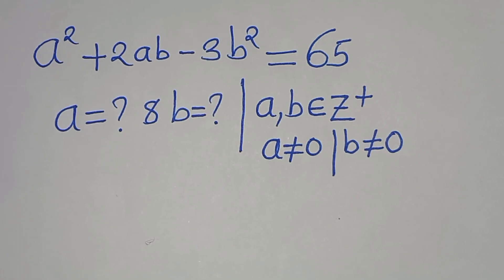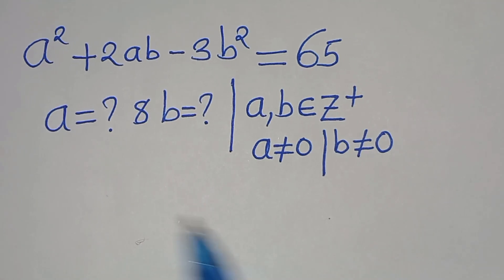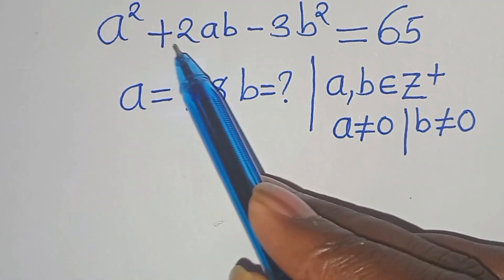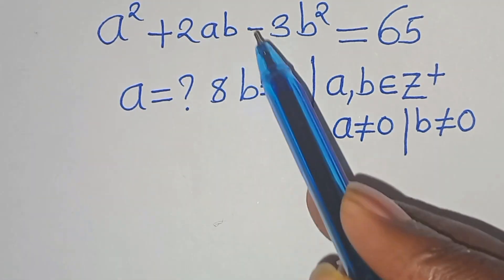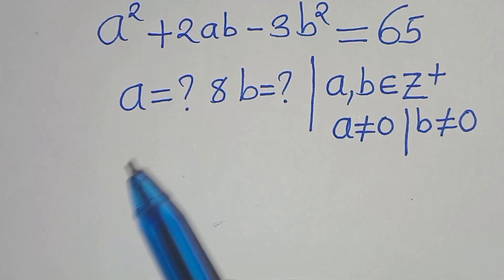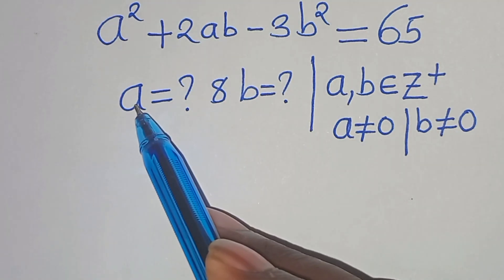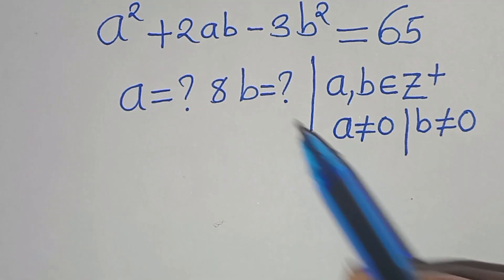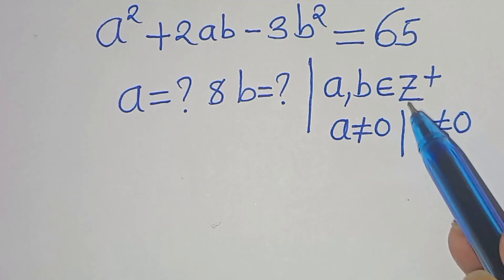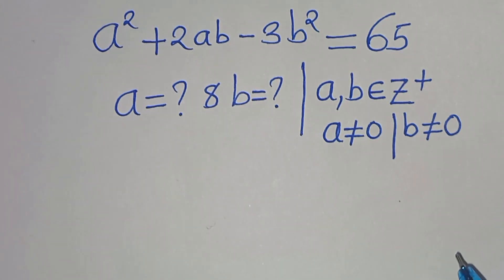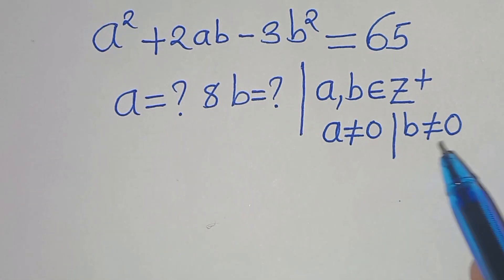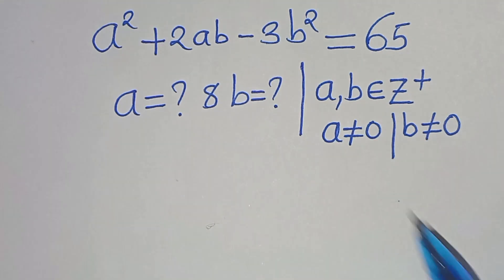Hello everyone, you are welcome to solve this nice algebra problem, which is a squared plus 2ab minus 3b squared, equal to 65. So what is the value of a and what is the value of b, given that a and b are members of positive integers, and that a is not equal to 0 and b is not equal to 0.